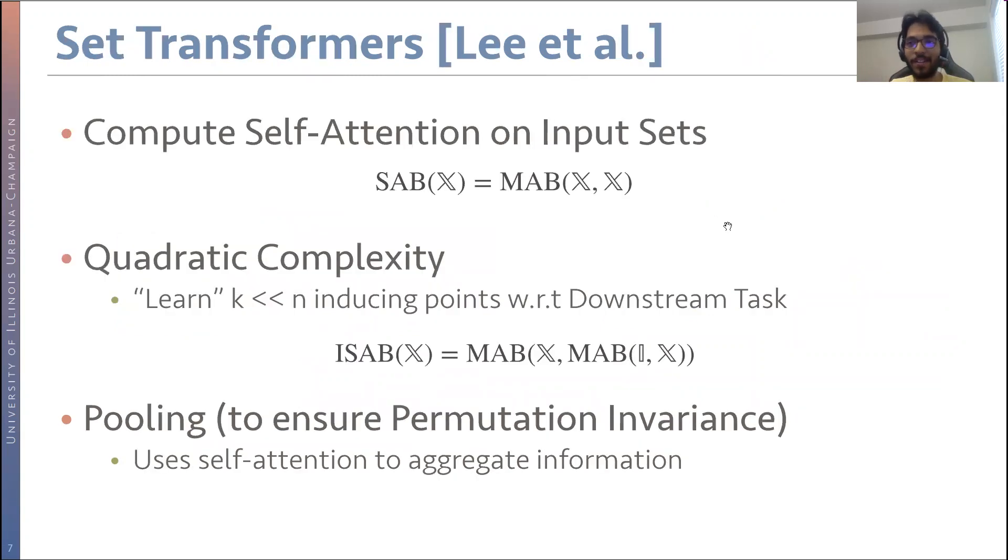The model we choose to work with for sets is set transformers. The main idea behind set transformers is to compute self-attention on the input sets. Self-attention essentially finds out those points in the input which are important for the task we want to optimize downstream. For example, if we want to do classification, it will attend to those points in the input that are important to classification.